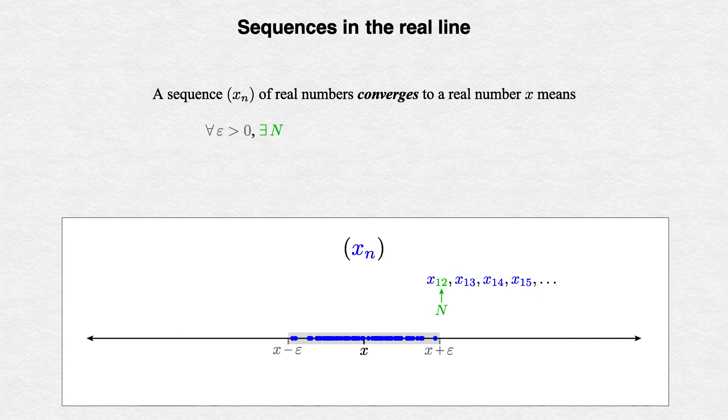All that remains is to express this diagram in symbols. What we see is that all of the rest of the terms, the terms with index little n at or past capital N, land inside the target, which means that these terms x_n lie strictly between x - epsilon and x + epsilon.